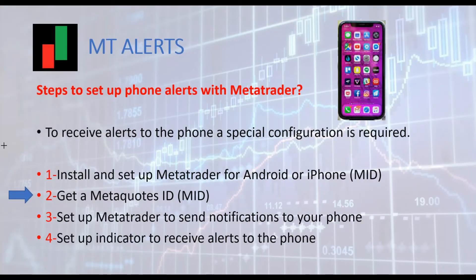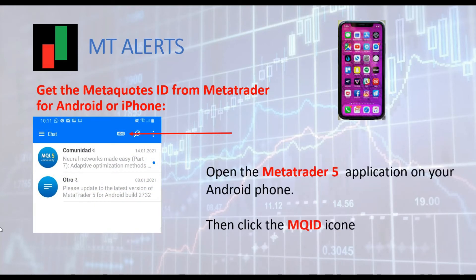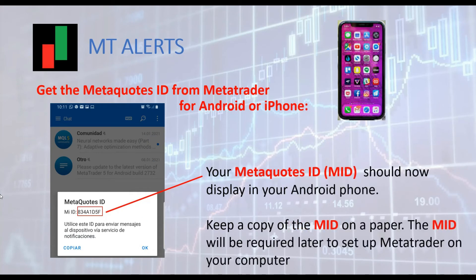The second step is to get a MetaQuotes ID. The MetaQuotes ID is unique and is attached to the phone. We can generate the ID with MetaTrader for Android. Open MetaTrader 5 on your Android phone, then click the MQID icon to get your personal MetaQuotes ID, as shown in the screenshot. Your MetaQuotes ID should now display on your phone. Keep a copy of this ID since you will need it to set up MetaTrader on your computer.